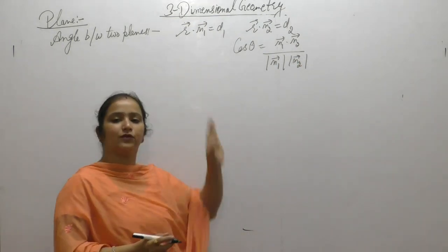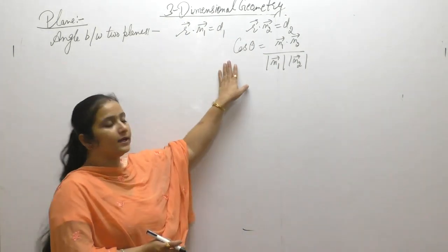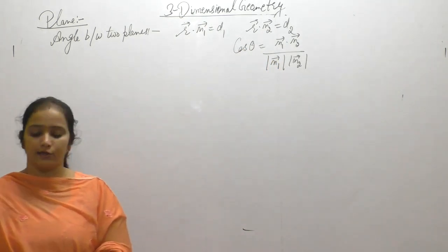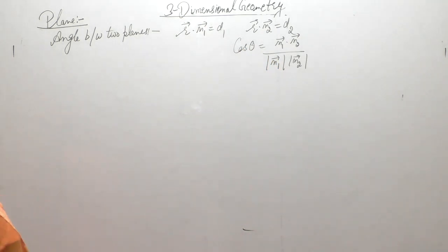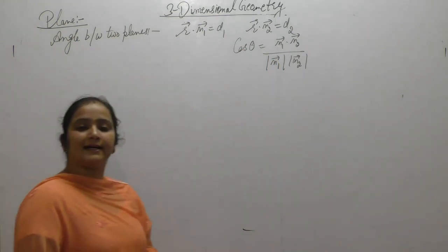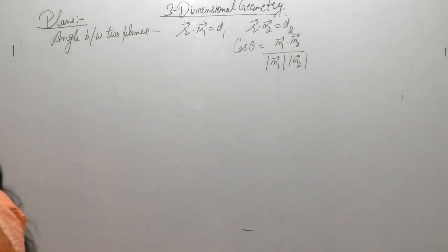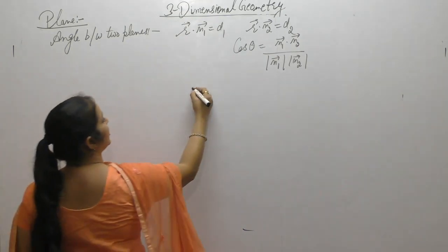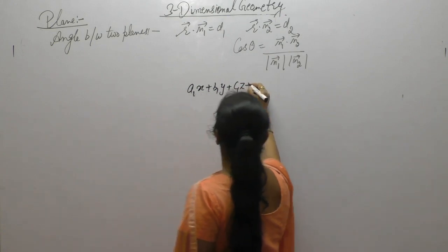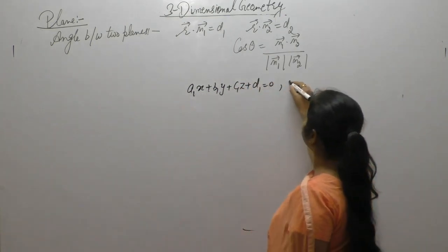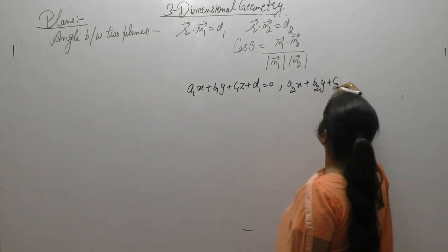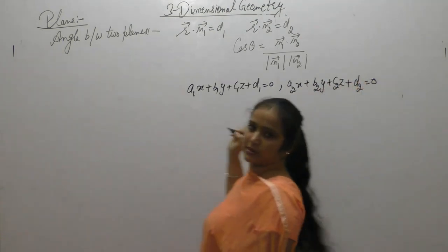When the vector equation of the planes are given, then the angle between them is N1 dot N2 upon magnitude of N1 into magnitude of N2. When the Cartesian equation of the plane is given, the Cartesian equation of the plane is A1x plus B1y plus C1z plus D1 equals 0, and A2x plus B2y plus C2z plus D2 equals 0.